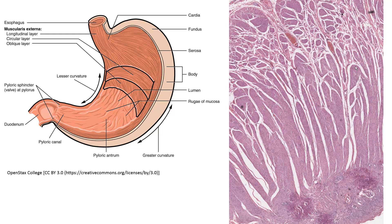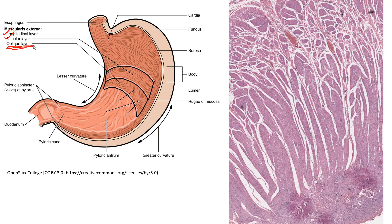Looking at the muscularis externa, in the cartoon on the left we have the outermost longitudinal layer and a circular layer — both familiar — but what we're not used to seeing is an innermost oblique layer. So there's a third layer of smooth muscle in the muscularis externa of the stomach. In the micrograph on the right you can see the borderline between the oblique layer above and the circular layer below, and then one more transition down to the longitudinal layer.